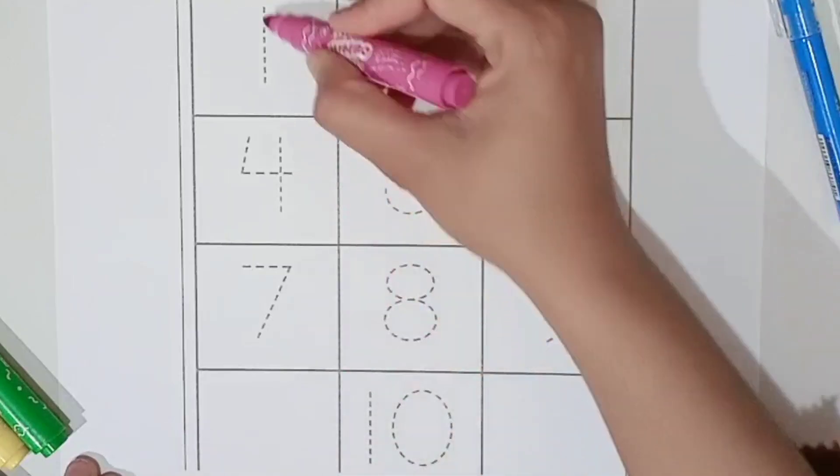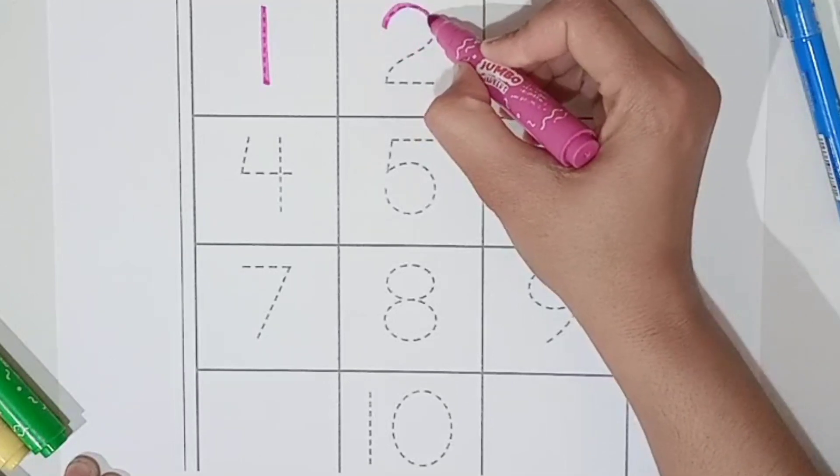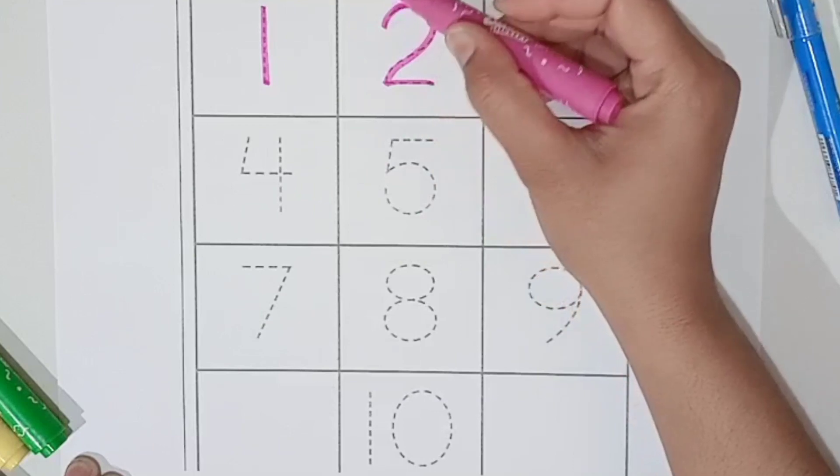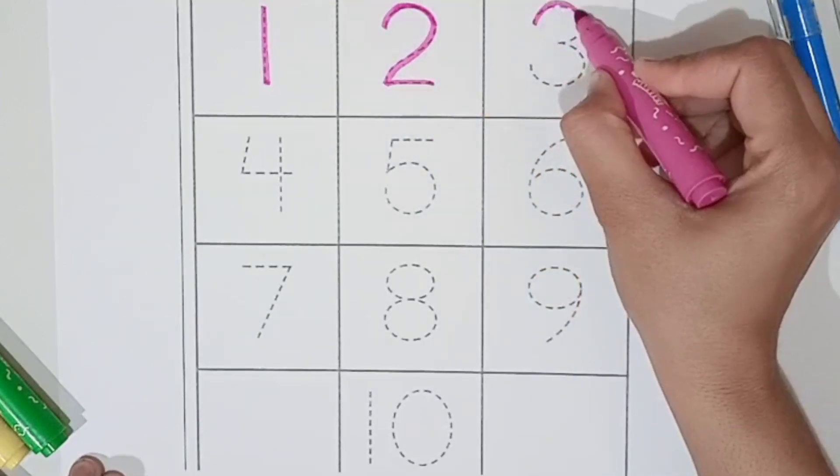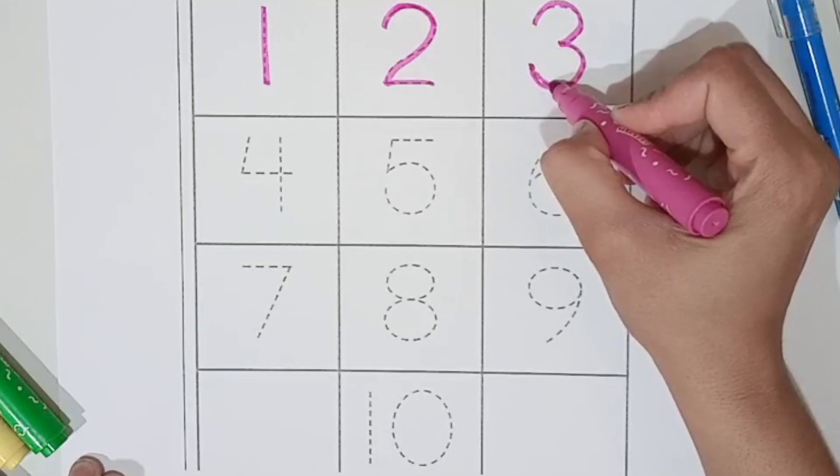Pink color. One, O N E 1. Two, T W O 2. Three, T H R E E 3. Purple color.